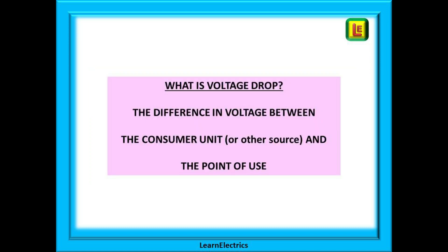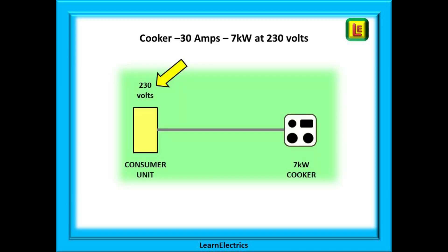Voltage drop is the difference in the voltage measured at the consumer unit or distribution board and the voltage that is measured at the point of use, such as the shower, the cooker, the garage light and so on. Here at the consumer unit the yellow arrow is indicating 230 volts. This circuit is supplying a seven kilowatt cooker that currently has everything turned on, so in this case let us say it is drawing its full load of 30 amps, and we will ignore any diversity.